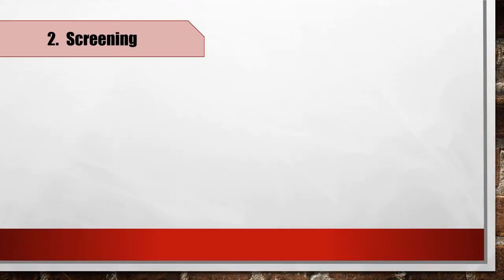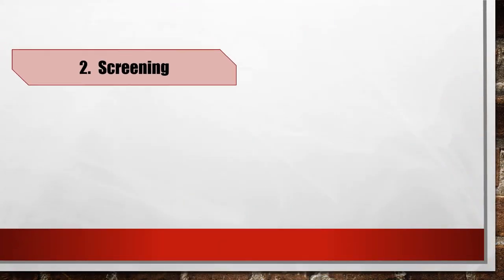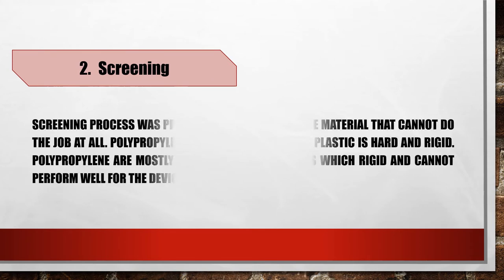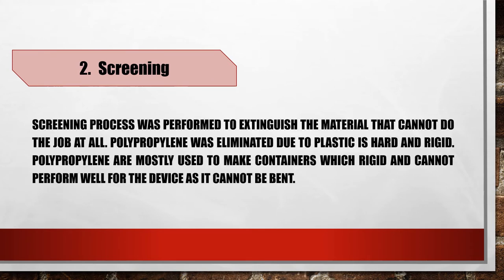Screening process. The screening process was performed to eliminate materials that cannot do the job at all. Polypropylene was eliminated because the plastic is hard and rigid. Polypropylene is mostly used to make rigid containers and cannot perform well for the device as it cannot be bent.